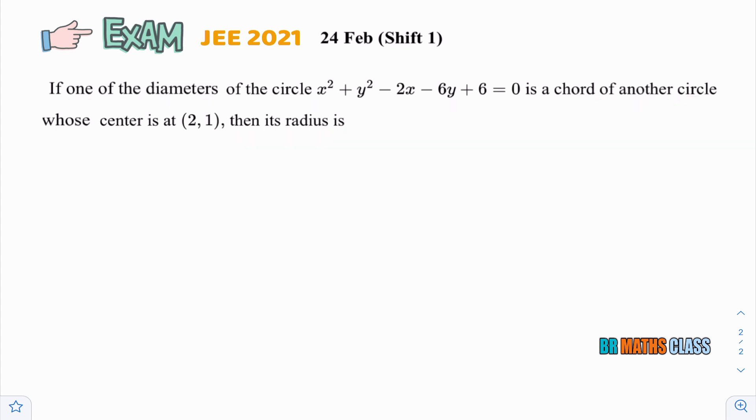If you observe the question, what they're asking? One of the diameter of the circle is a chord of another circle whose center is at (2,1), then its radius is. To understand this question, first I'll draw the diagram. They're given one circle equation. You observe this is that circle.